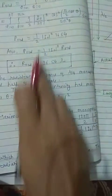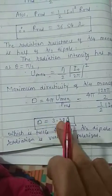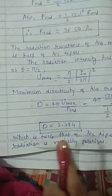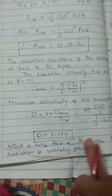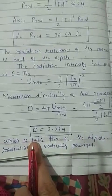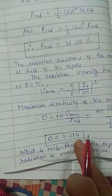So substituting all these expressions, we get directivity to be 3.284 which is twice that of lambda by 2 dipole. The radiation from the monopole are vertically polarized.